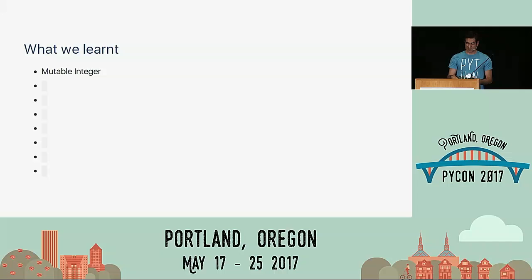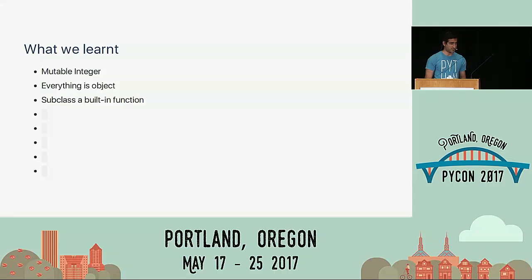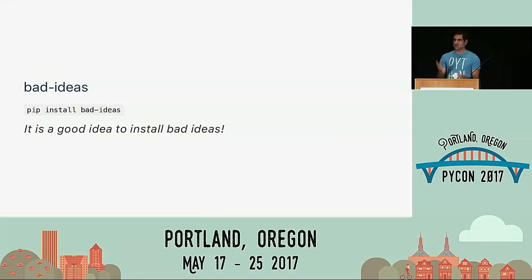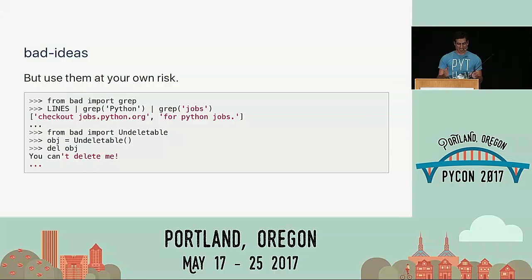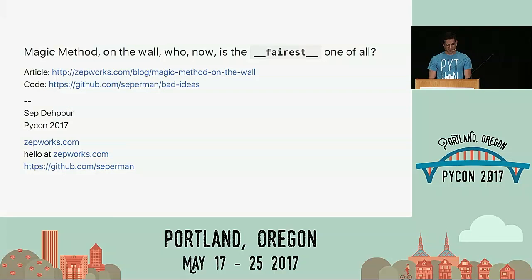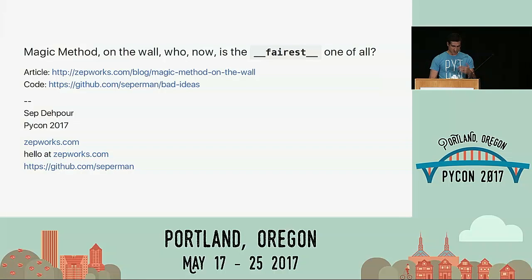Here's an overview of what we learned: mutable integers, the fact that everything is an object including built-in functions and you can subclass them, how to echo to file, how to implement grep and pipe in Python, garbage collection, reference counting, and undeletable objects. All of this code is in a package called `badideas` — you can pip install it and enjoy. It's simple: `from bad import grep`, `from bad import undeletable`. References are in my article at zepworks.com. The code examples are on GitHub. Pip install badideas — it's a good idea to install bad ideas. Thank you very much.